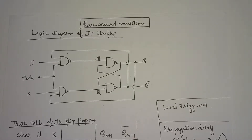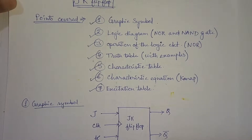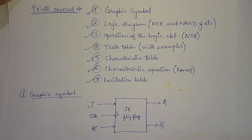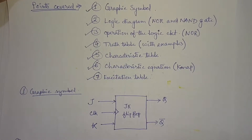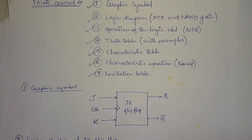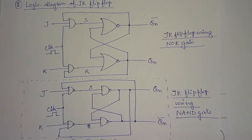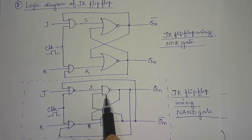In the last tutorial on JK flip-flop, we saw these points about the graphic symbol, logic diagram, operation of the logic circuit, truth table with examples, characteristic table, characteristic equation, and finally the excitation table. This figure shows the logic diagram of a JK flip-flop — one using a NOR gate and another using a NAND gate.